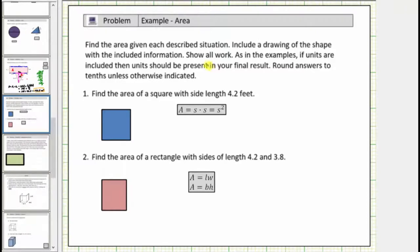Find the area given each described situation. Include a drawing of the shape with the included information. Show all work. As in the examples, if units are included, then units should be present in your final result. Round answers to the tenths, which is one decimal place, unless otherwise indicated. Number one, find the area of a square with side length 4.2 feet.